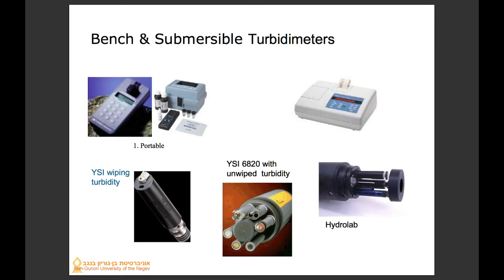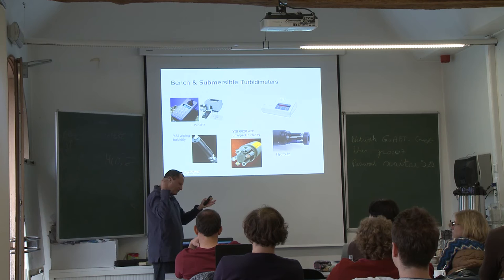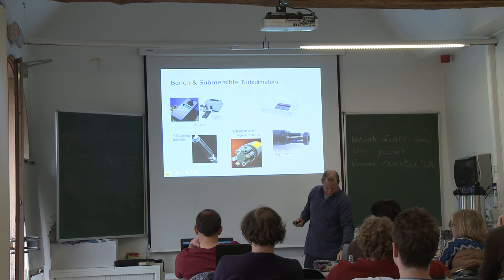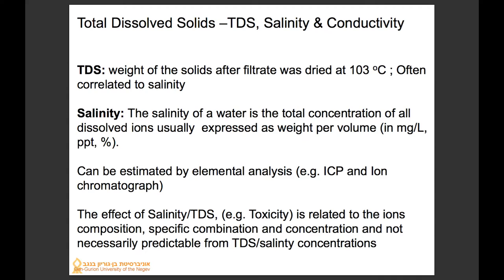Turbidity can be measured online or manually. For online measurement, a wiper is needed to keep the sensor clean. A light source passes through the sample and the scattered light is measured — the more turbid the water, the less light passes through, so turbidity is higher. The same principle applies to manual one-by-one measurements.